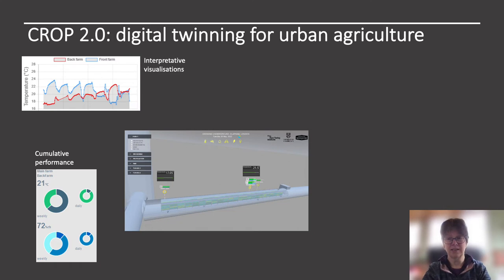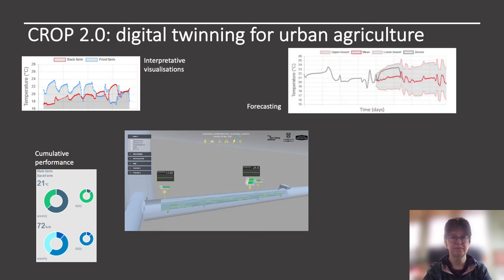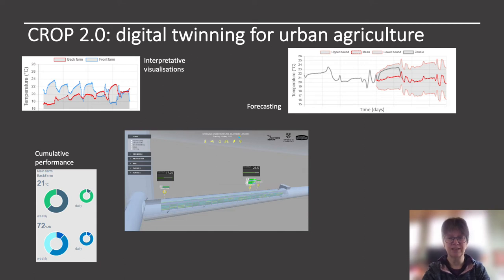This is important as maximum crop yield depends on optimum conditions being maintained within the farm over the growing period. Since the crops grown are micro salads, most of which are in the farm for a period of just 7 to 10 days, the cumulative conditions over the previous week give an indication of potential crop yields. We've also added a data-centric temperature forecasting tool that predicts temperatures for two days into the future, based on the historic temperatures and lighting conditions in the farm. The lighting conditions are important as the grow lights are the main source of heat in the farm.